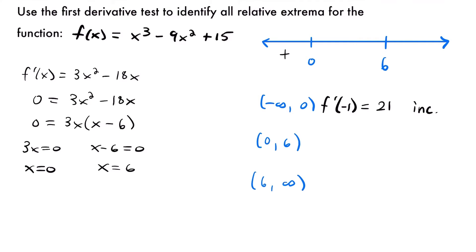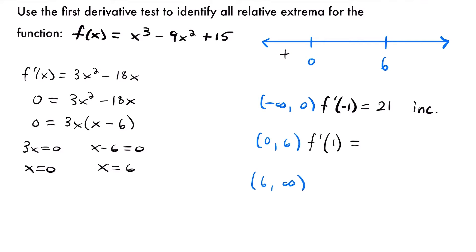Now let's check our next interval from 0 to 6. I'll pick positive 1. f prime of 1 equals 3 times 1 squared minus 18 times 1, which is 3 minus 18, which is negative 15. So we have a negative slope, meaning the function is decreasing on that interval. We label that as negative on our number line.